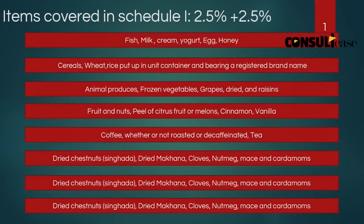Schedule 1 is 2.5% CGST, so the combined tax is 5%. There are around 700 to 800 items covered in total — approximately 200 items across two lists within this schedule.